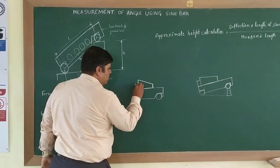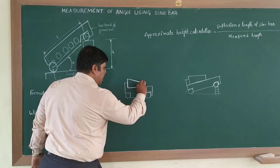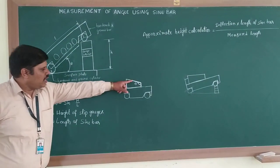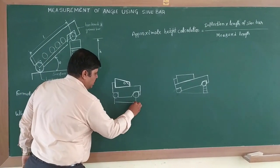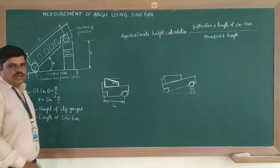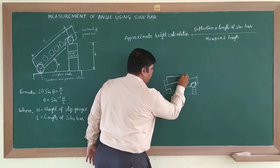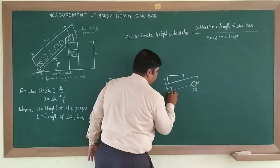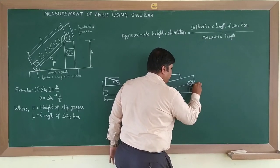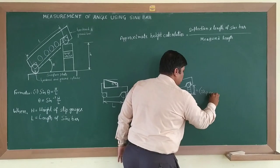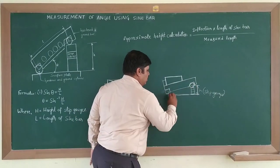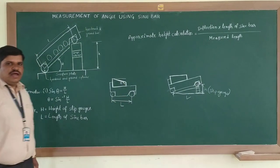Suppose this is the component and we can see that there is an angle in this component, and we have to determine this angle. This is the sine bar with length L. If we can make this component parallel to the horizontal plane, where the surface has been made horizontal by building the height using slip gauges, we can determine the opposite side. As we know the length of the sine bar as L, we can determine the angle of the given component.